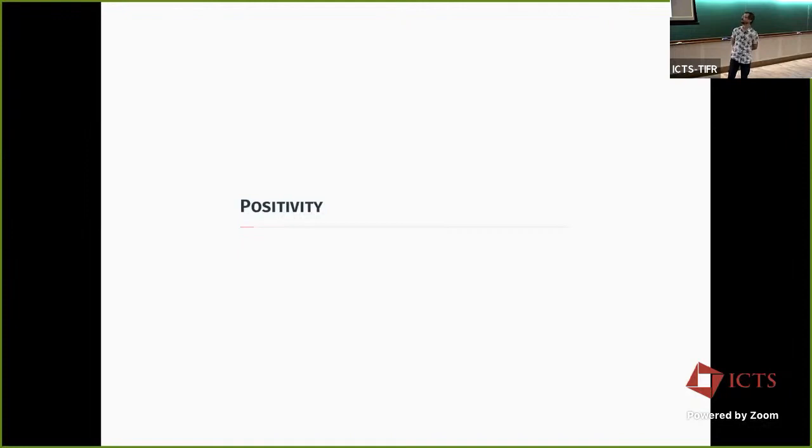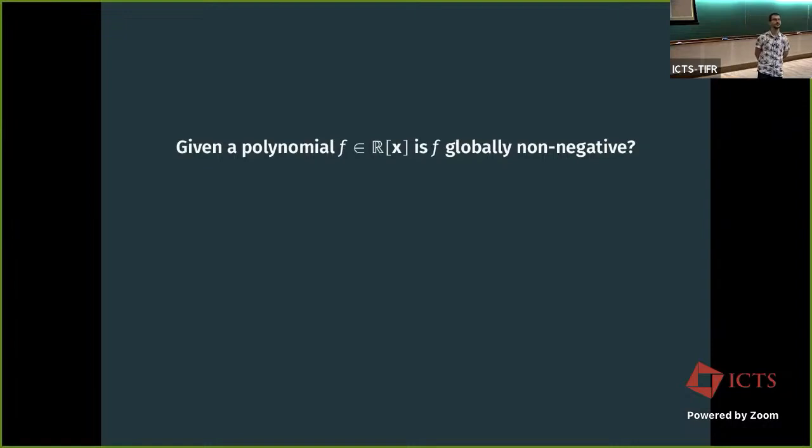So, positivity. Here is an introductory question. We start with a polynomial — a very simple object — a real polynomial f in one or several variables, and we want to ask when f is globally non-negative.